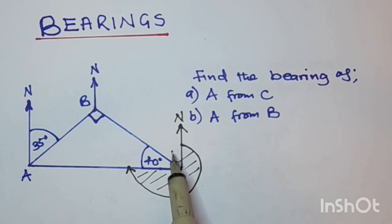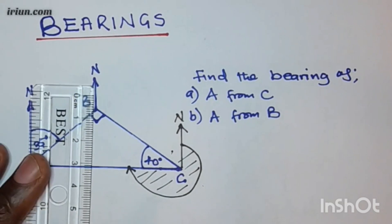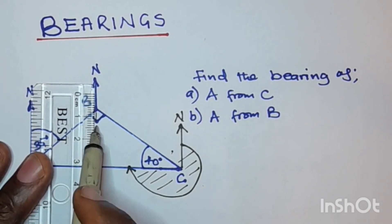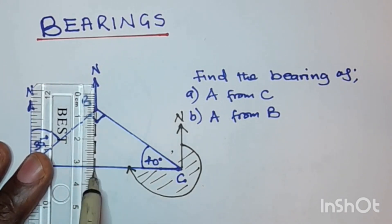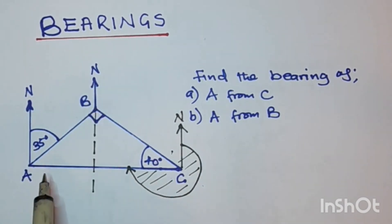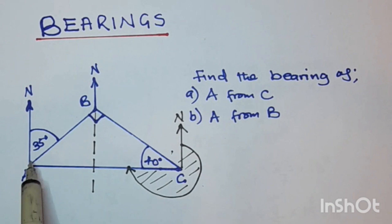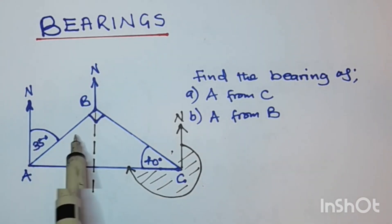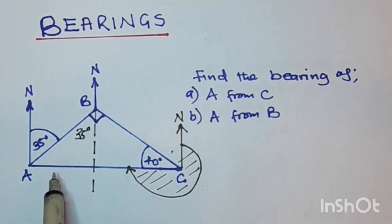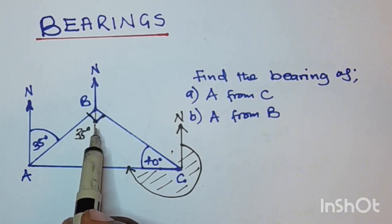We will consider extending this north here so that we use the properties of alternate angles. This north and this north are parallel lines, and this line is a transversal. So this angle here is going to be equal to this angle, because they are alternate angles — so you are going to have 35 degrees here as well.